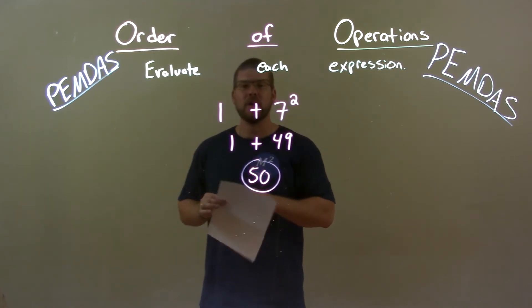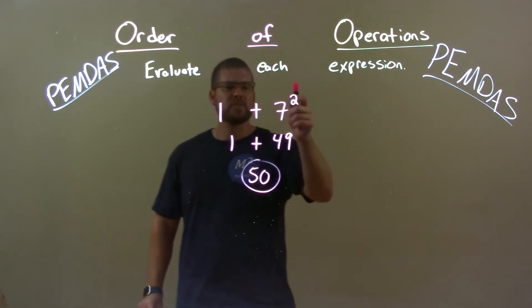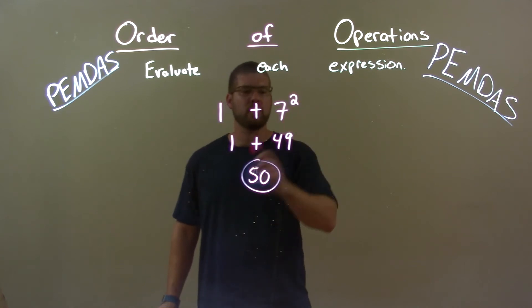Quick recap. We're given 1 plus 7 squared. Well 7 squared comes first here. 7 squared is 49. Then we bring down the 1. 1 plus 49 is 50. So again final answer is just 50.